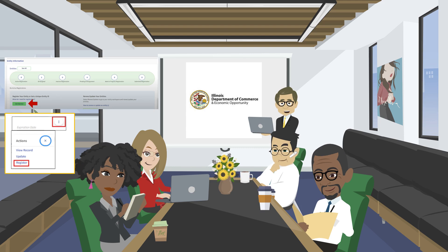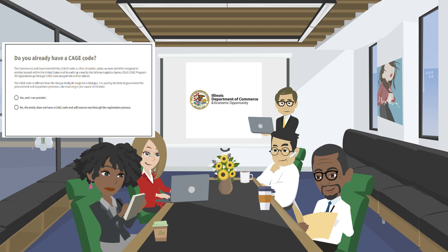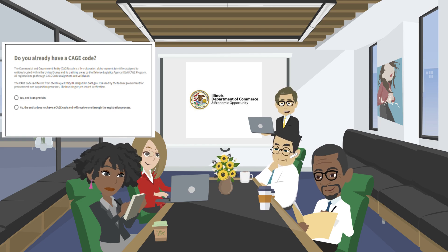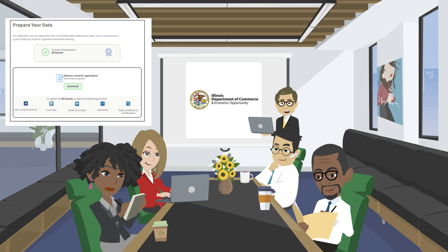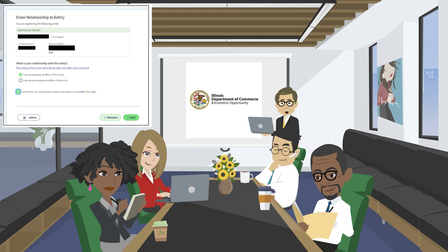You will be directed to input your entity information. From the Legal Entities list, your entity will now be available. Click on the listing to proceed with activating your registration. From here, you may notice questions similar to those you answered when applying for your UEI. There may be additional questioning, including: Do you have a CAGE code? Based on your answer, you will either provide your CAGE code or receive one through the registration process. On the Prepare Your Data screen, review the sections you are required to complete based on your entity's registration type — either all awards or financial assistance only. Now enter the relationship to the entity and indicate whether you are an employee or officer of the entity.